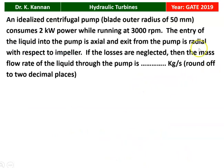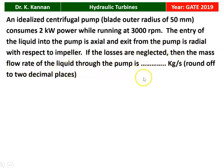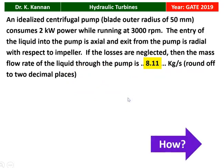The next question is from the 2019 question paper. An idealized centrifugal pump with blade outer radius 50 mm consumes 2 kilowatts of power while running at 3000 RPM. The entry of liquid into the pump is axial and the exit from the pump is radial with respect to the impeller. If losses are neglected, then the mass flow rate of liquid through the pump is how many kg/s, rounded off to 2 decimal places? The answer is 8.11 kilograms per second.